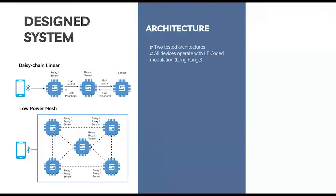Now I am going to talk about the design and architecture developed. In this case, two different architectures were tested. Both of them can be used independently. One is a linear GATT chain architecture, the other is a BLE mesh. Both use coded modulation, also known as long range, which is specific to the new Bluetooth 5 standard. The difference lies in the communication. While in the linear GATT chain each node forwards the message to the previously connected one, in the mesh the messages are broadcast to all nodes in range. This is the best approach in terms of redundancy, but is not very energy efficient, as it involves continuous scanning.